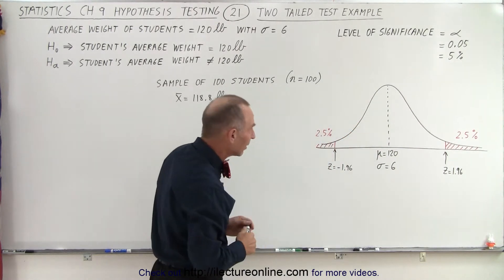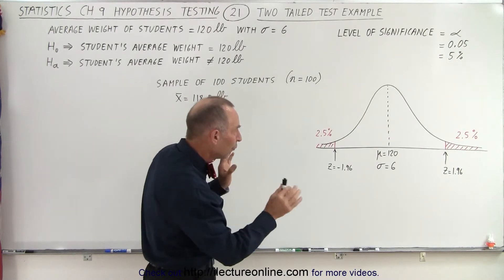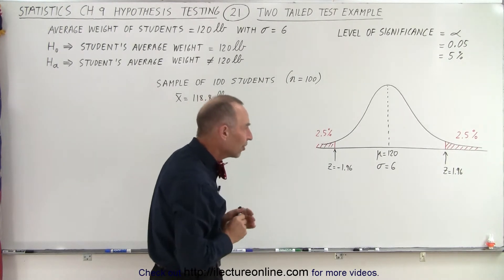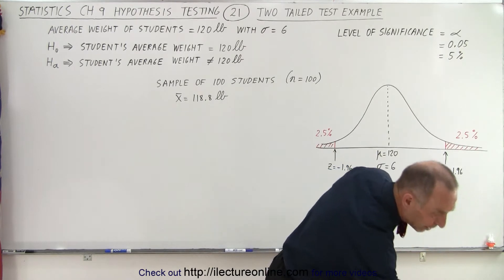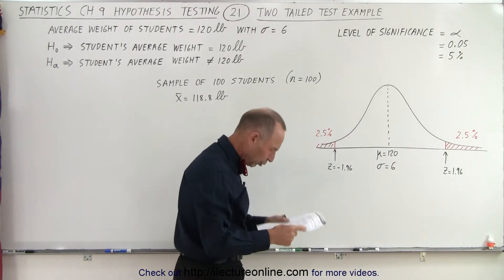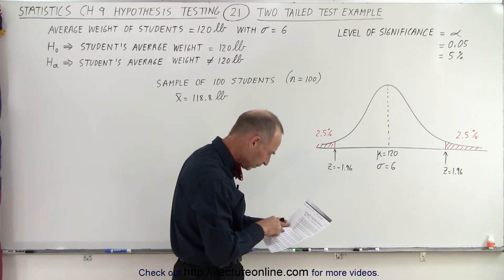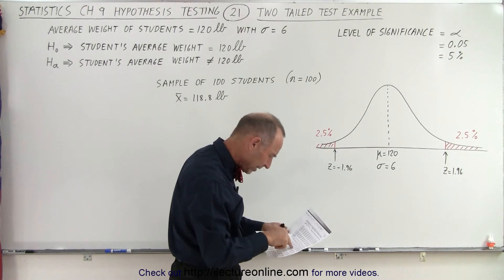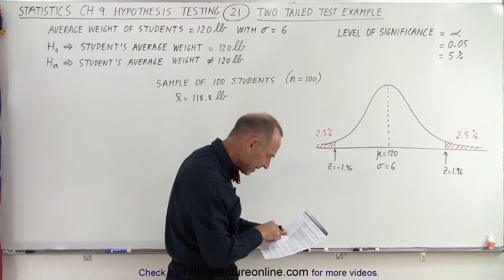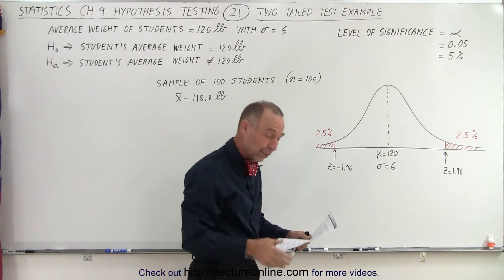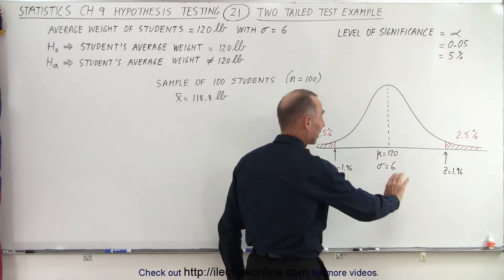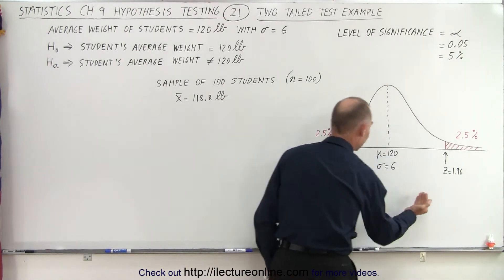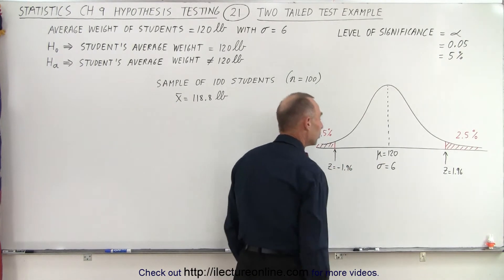the z number for the boundary on both sides. So what we need to do then is we take our table, we look up 2.5% in the table, and 2.5% would put us right there which is 1.96. So we read that right off the table. So on the right side we have z equals 1.96, on the left side we have z equals negative 1.96.